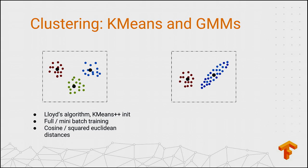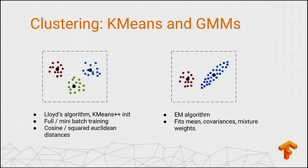GMMs, on the other hand, model the data as a mixture of Gaussians. These are much more powerful models and also harder to train. For these, we use an iterative EM algorithm, and we allow the user to choose from a combination of means, covariances, and mixture weights to train on.